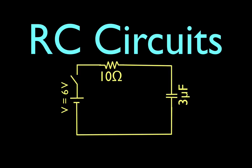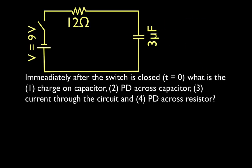In today's video I am going to go over some basic circuit analysis for RC circuits. Those circuits are circuits that contain both resistors, hence the R, and capacitors, hence the C. We have a resistor and a capacitor right here, so we have an RC circuit.